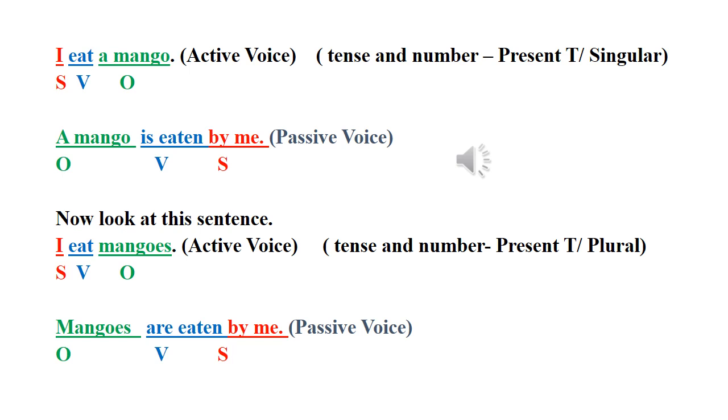Then let's look at the sentence example. Mangoes. Mangoes, it is plural. Therefore, we use the helping verb are. Then eat. As it is present tense, eat, ate, eaten. Third verb form or past participle of eat. Are eaten by me. I eat a mango. A mango is eaten by me. I eat mangoes. Mangoes are eaten by me.